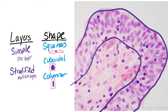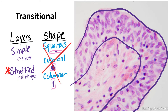Looking in the epithelial layer, we see multiple layers of cells, so this is a stratified epithelium. And when we think about the shape, we feel confused, because they're not squamous, they're not cuboidal, they're not columnar. When you see that, it means you are looking at transitional. Transitional epithelium is a stratified epithelium — we just don't say the word stratified in the name.